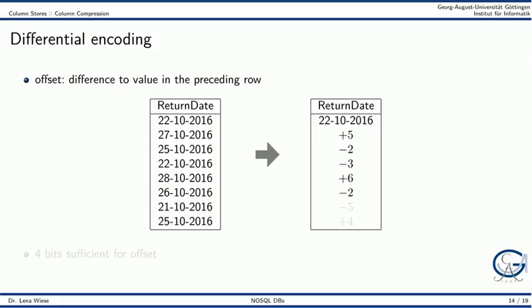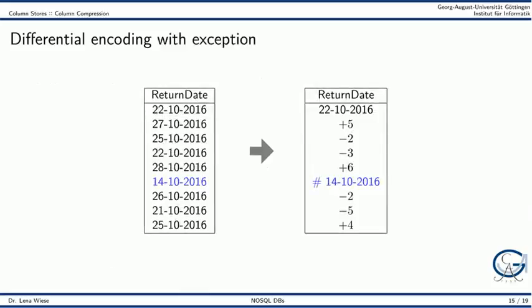The difference between 28 and 26 is minus 2, between 26 and 21 is minus 5, and between 21 and 25 is plus 4. Again we see that four bits are sufficient for storing the offsets. However, it might happen that offset sizes are exceeded — for example, the difference between 28 and 14 is 14, which cannot be stored by a 4-bit offset. Again we can use a special marker to store these exceptions.